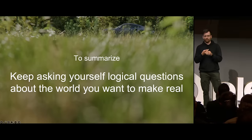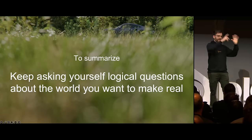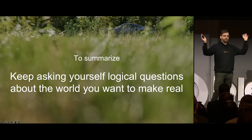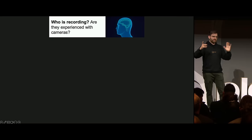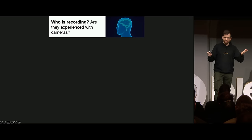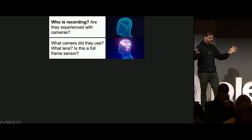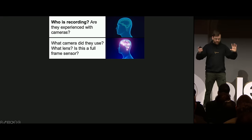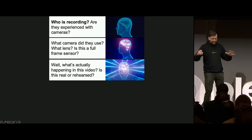So to summarize: keep asking yourself logical questions about the world you want to make real. Start with the easy questions and then zoom out until you get quite existential. Start with: who is recording, are they experienced with cameras? Then take a step back and look at the entire recording situation - what camera did they use, what lens, is it a full frame sensor? And then keep going.